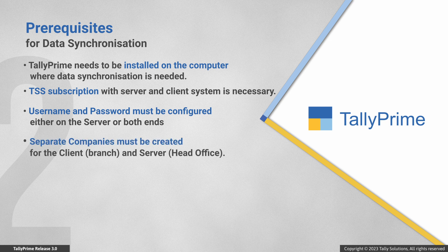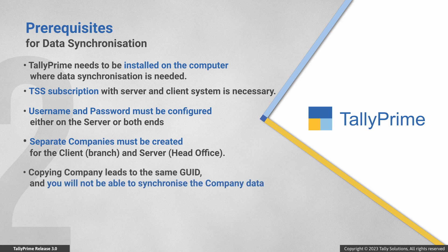If you are using the Tally.Net feature to synchronize the data, then any of the companies — preferably the server company or both — must have a username and password as configured under user roles after enabling security control. You should also create separate companies in server and client. If you copy the company and paste it to the other side, data will not get synchronized as both companies will have the same code, which is a unique ID created when you create a company.